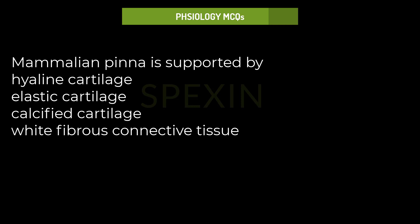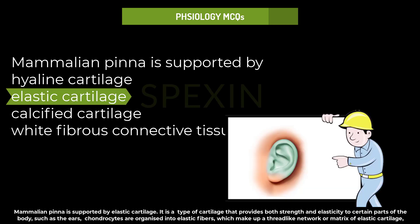Mammalian pinna is supported by: hyaline cartilage, elastic cartilage, calcified cartilage, or white fibrous connective tissue? Mammalian pinna is supported by elastic cartilage. It is a type of cartilage that provides both strength and elasticity, such as in the ears. Chondrocytes are organized into elastic fibers, which make up a thread-like network or matrix of elastic cartilage.